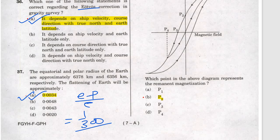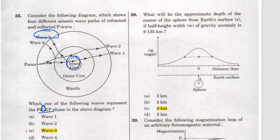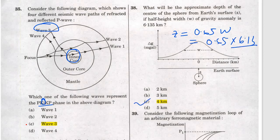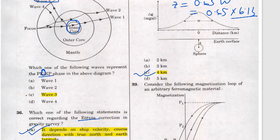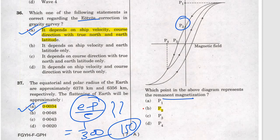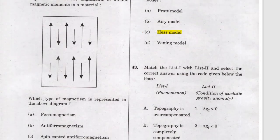Question 38 answer is a. If you do all the calculation it takes time — with 150 questions you need to save time otherwise you can't complete. Question 39: the half-width formula is z equals 0.65 times width; multiplying 0.65 by 6.13 gives approximately 4. Question 40: remanent magnetization is P2, and this is ferromagnetism — the magnetic moments are unequal in their sizes.